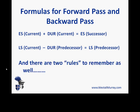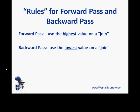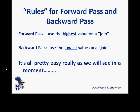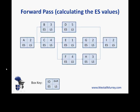There are also two rules to remember. During the forward pass, if activities are coming together — in other words, they join — we need to use the highest possible value given by the formulas from the things that join at that point. On the backward pass, if we have a join, we use the lowest value. So let's do our forward pass to calculate early start values on the network. The first thing you do is set the early start of activity A, the first one, to zero.